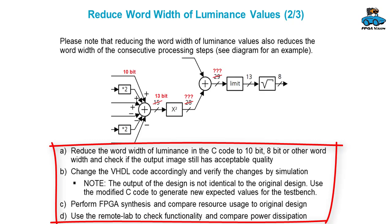Your steps would be to modify the C code and check if the output image still has acceptable quality. Then you change the VHDL code and verify the changes by simulation. Please note the result of the design will be slightly different, so you have to modify both the C code and the VHDL design so that you still get the same results from both representations. Then you can do FPGA synthesis, compare resource usage, and use the remote lab to check functionality and compare power consumption.